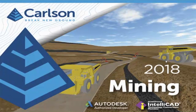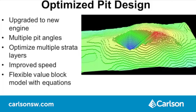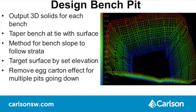Now for Carlson Mining. 3D Kriging has been updated and has a new 3D variogram tool that guides you through the workflow and has visualization to show the impact of parameters. Optimized Pit Design is upgraded to a new engine that handles multiple pit angles, multiple strata, and has improved speed. There is a new routine to define the value block model, which allows for user-defined equations. With Design Bench Pit, you can now output 3D solids for each bench, taper the bench as it approaches the tie with the surface, and have the bench slope follow a strata instead of using a fixed bench slope.